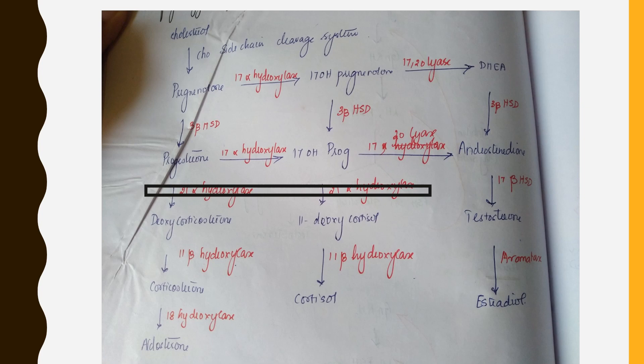In 21-alpha hydroxylase deficiency, using the same pathway chart: this is where 21-alpha hydroxylase gets blocked. Once blocked, the systems above get overloaded — progesterone accumulates, pregnenolone accumulates. With nowhere else to go, they go sideways. 17-hydroxypregnenolone and 17-hydroxyprogesterone also accumulate because they cannot go forward either. All of these get shunted ultimately into the sex steroid pathway.